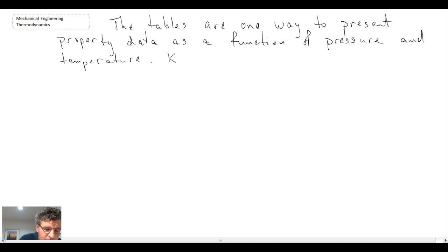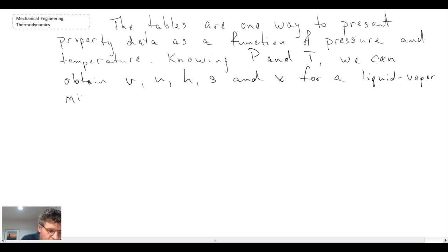Using the tables, what we saw is that if you know P and T, pressure and temperature, or some of the other properties, you can usually find the other properties. And the ones that we looked at were specific volume, internal energy, enthalpy, entropy, and we also looked at quality, that was for a liquid vapor system or mixture.